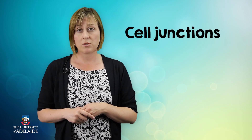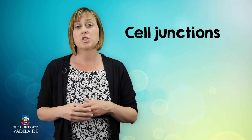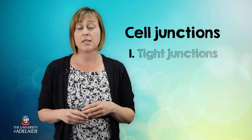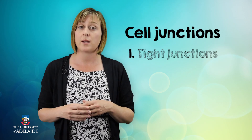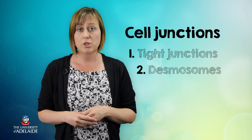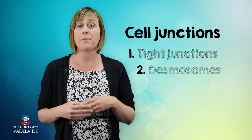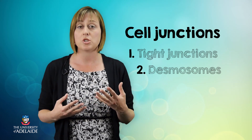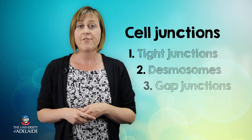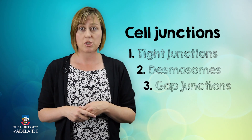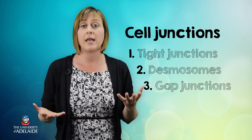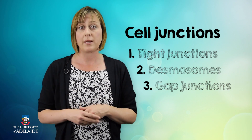Just to recap what we've covered in this lesson, there are three types of cell junctions. Tight junctions, which firmly adhere adjacent cells to one another to form an impenetrable barrier. Desmosomes, which further strengthen these tight junctions and make them resistant to stretching and twisting. And finally, gap junctions, which enable cells to communicate effectively with one another.